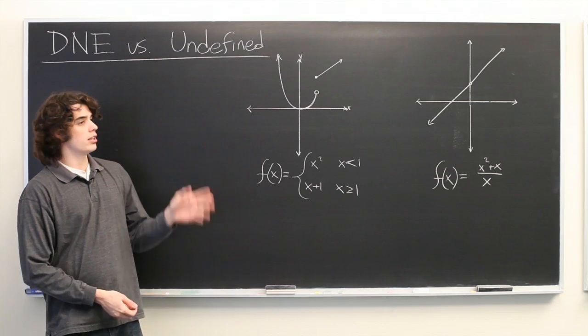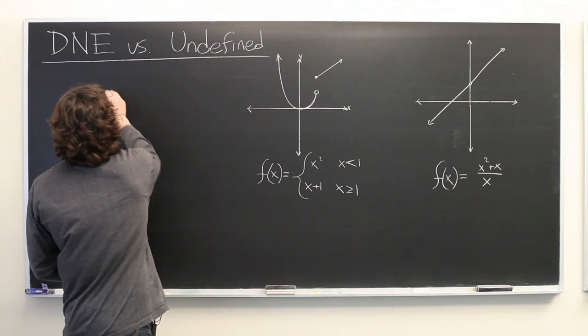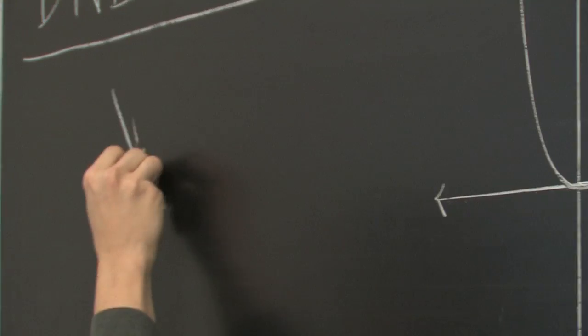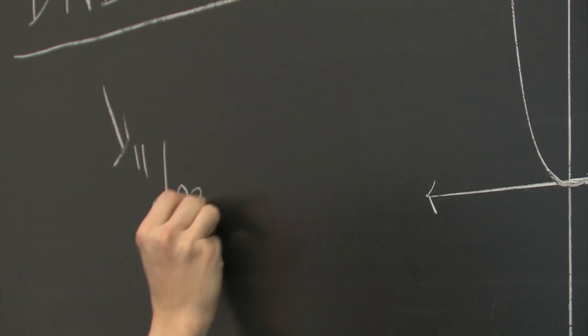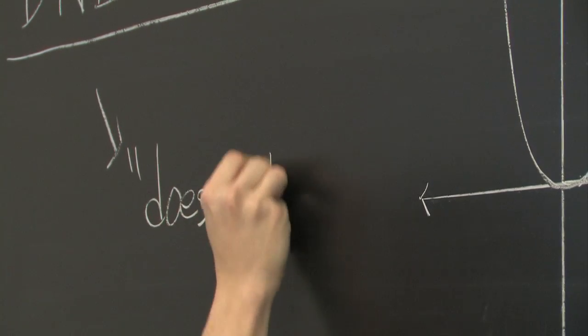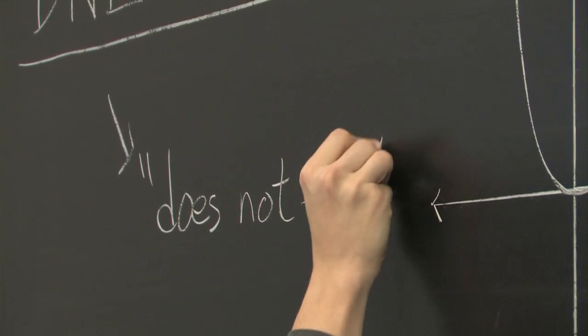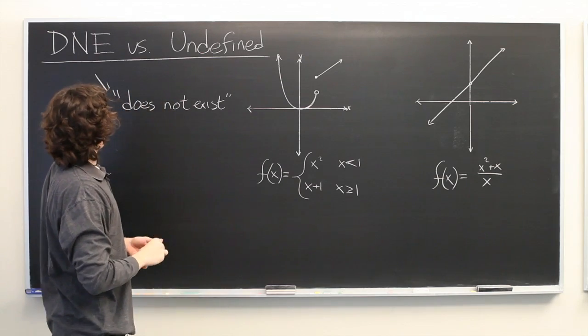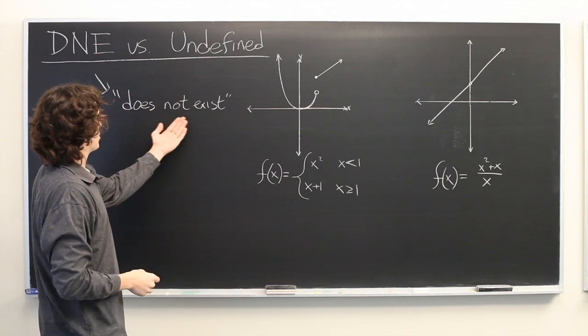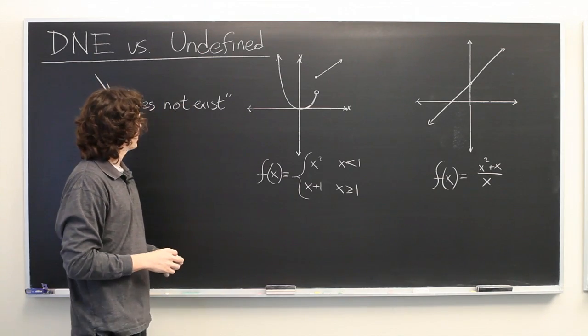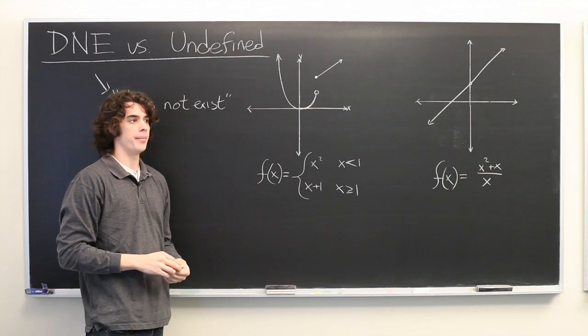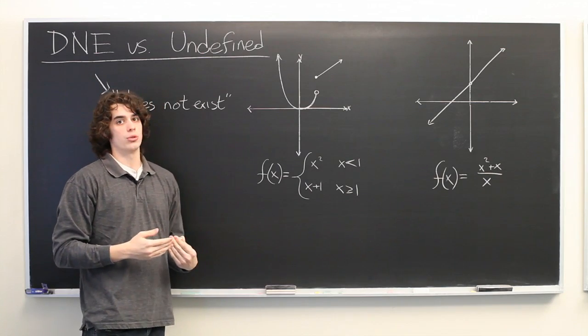So DNE is an acronym which stands for does not exist. And you might think that these two terms are equivalent, does not exist versus undefined. And they are fairly similar, but the only real difference is when they are used.